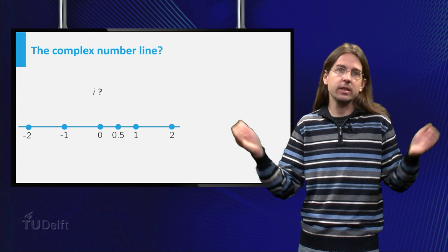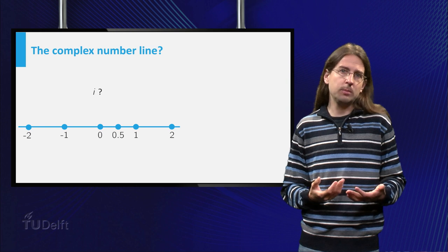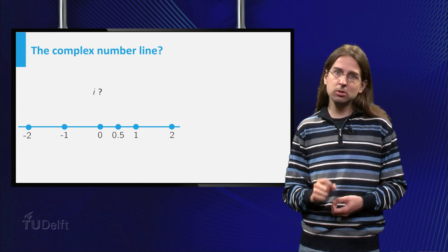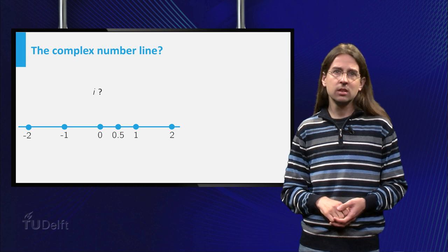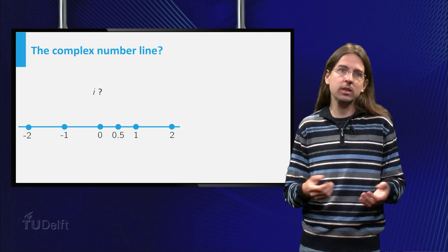Where would you place i? It does not really fit on the line. As you want, for example, that points close together on the line have squares which are also close together. But no point on the number line has a square close to i² equals minus 1.